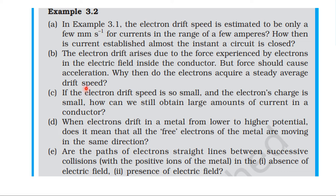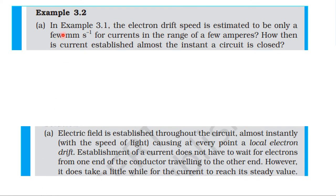From NCERT textbook, from the topic current electricity, learn the example 3.2. First one, in example 3.1, the electron drift speed is estimated to be only a few millimeters per second for currents in the range of a few amperes.